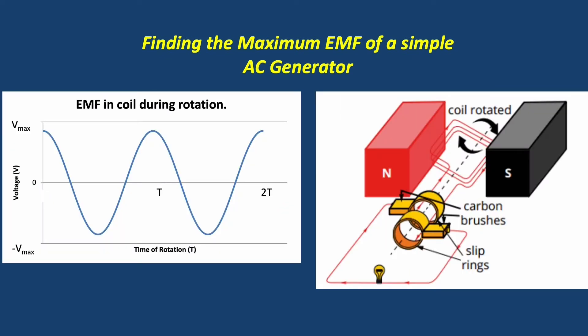When we look at the voltage generated by a simple AC generator, we see that the voltage cycles between Vmax and negative Vmax. This is possible because the simple AC generator is attached to a split ring commutator.